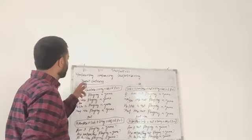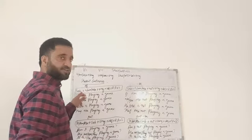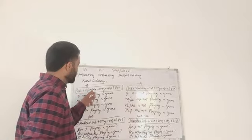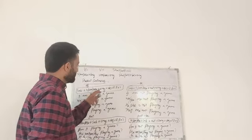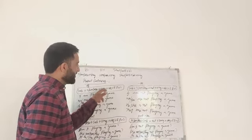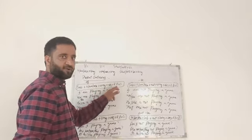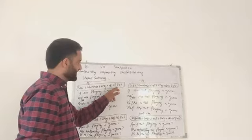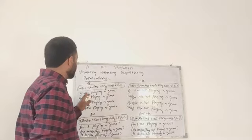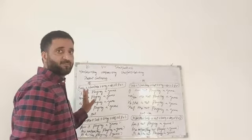Let us discuss present continuous. The structure is: Subject plus is/am/are plus verb in -ing form, plus object plus remaining part of sentence. For example: